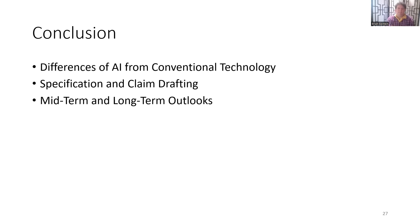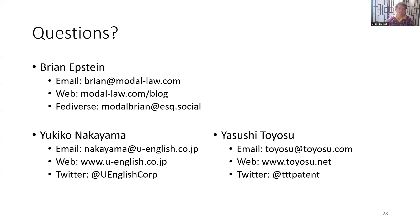That concludes the presentation. We looked at the differences of AI from conventional technology and how they lead to differences in specification and claim drafting. We also looked at midterm and long-term outlooks for prosecution. I haven't seen this topic discussed anywhere — not on blogs, CLEs, or LinkedIn. We can expect people will ask a lot of questions, and I think this will get a lot of attention. Thank you so much — take care.